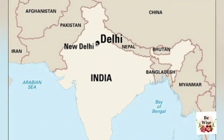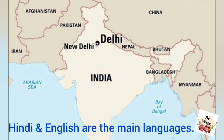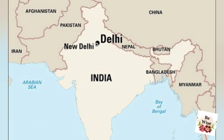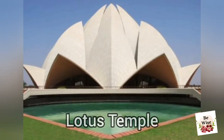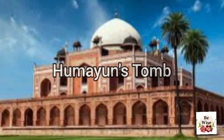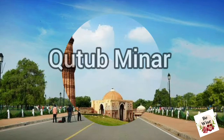Delhi is a Union Territory of India. New Delhi is the capital of India. Hindi and English are the main languages. Some places of interest in Delhi are the Lotus Temple, Humayun's Tomb, India Gate, and Qutub Minar.